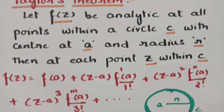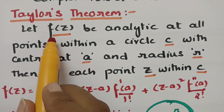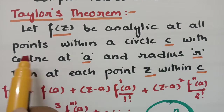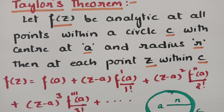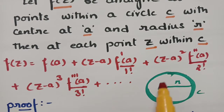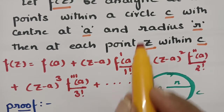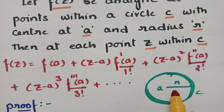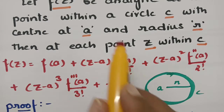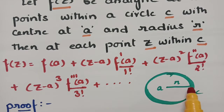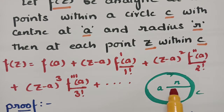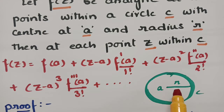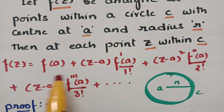It is given that f of z be analytic at all points within the circle c. This is the circle c with center at a. So a is the center point and r is the radius and this is the circle c. Here f of z is analytic within the circle c. Then this statement is the Taylor's theorem.